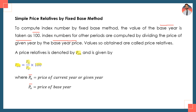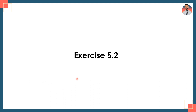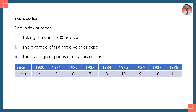Now, to calculate simple price relatives using fixed-base method, I choose exercise question 5.2. Is pe hum apply karenge aur calculate karenge price relatives using fixed-base method. Exercise question 5.2: find the index number (a) taking the year 1930 as base, (b) taking the average of the first three years as base, and (c) taking the average of the prices of all years as base. Years data is given from 1930 to 1938, and prices are: 4, 5, 6, 7, 8, 10, 9, 10, and 11.